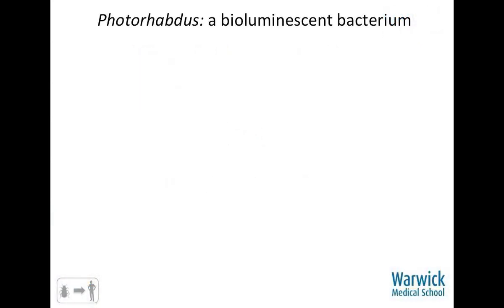So let me introduce you to Photorhabdus. First, I want to set the scene. You've got to think about the history of life on Earth. For huge periods of evolutionary time, there was really nothing but bacteria, in terms of bacterial infections, and invertebrates. Mammals didn't come on the scene until far more recently. So a lot of the early evolution of virulence and pathogenicity would have gone on between these early bacterial pathogens and their invertebrate hosts. This has provided a reservoir, a starting point, for a lot of modern mammalian virulence factors — and this is where my thinking is coming from.